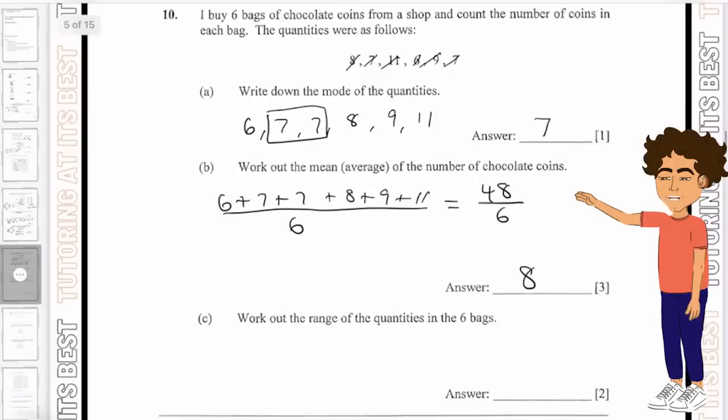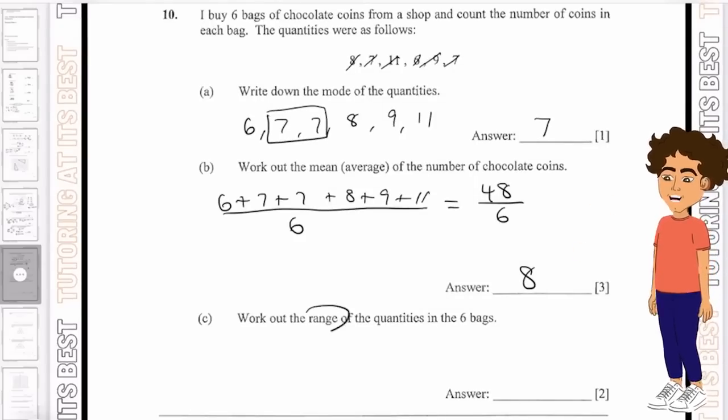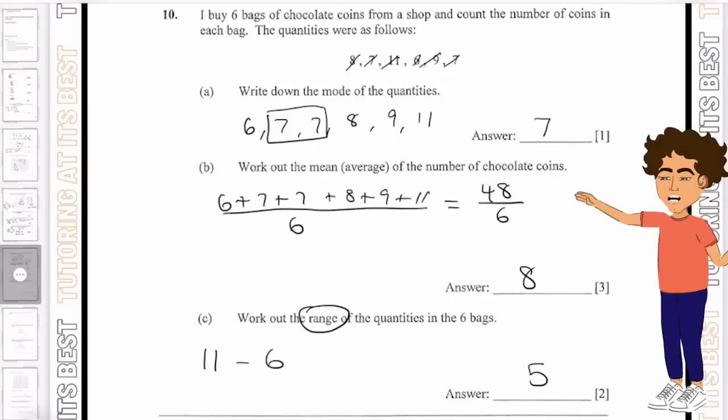And then finally, it states work out the range of the quantities in the six bags. We know range is your largest, take away the smallest, where our largest is 11 and smallest is 6. So if we calculate the subtraction, we will get 5 and that is our answer.